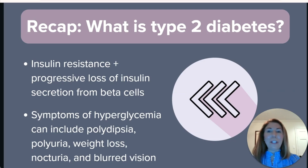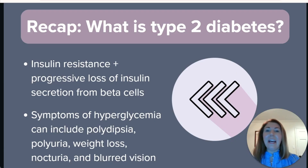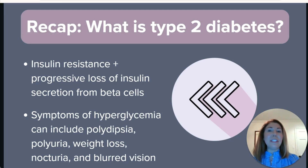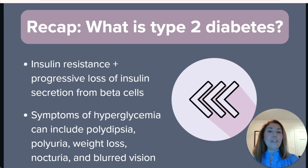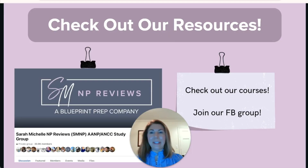Now for a quick recap — what is diabetes? Type 2 diabetes is most commonly caused by a combination of insulin resistance and a progressive loss of insulin secretion from beta cells, which results in insulin deficiency and hyperglycemia. There are several classic symptoms that may present with hyperglycemia, including polydipsia, polyuria, weight loss, nocturia, and blurred vision.